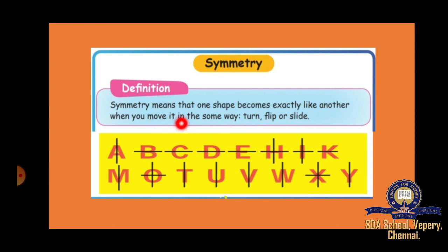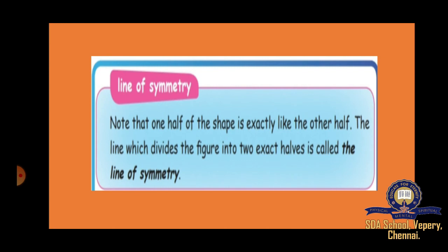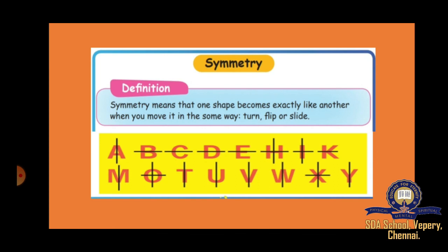The next thing is symmetry. Symmetry means one shape becomes exactly like another when you turn, flip, or slide it — the shape should be the same. One half is exactly the same as the other half. The line which divides a shape into two equal halves is called the line of symmetry.